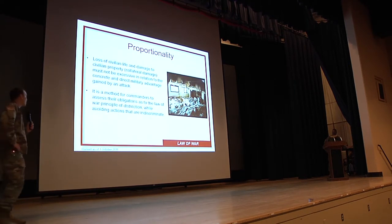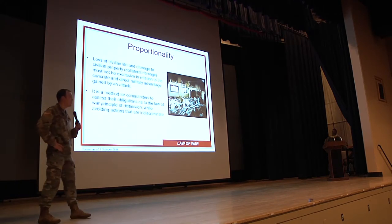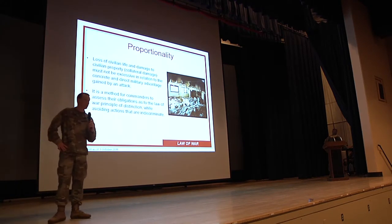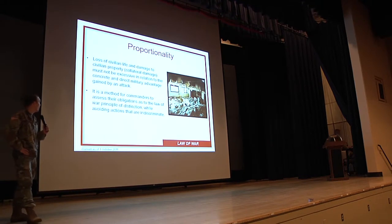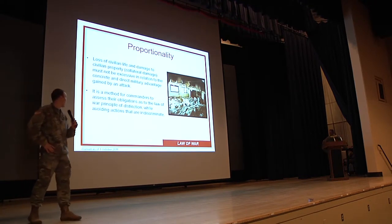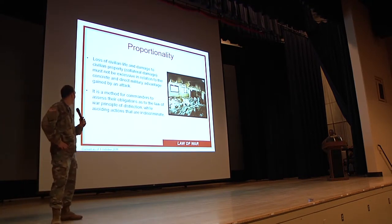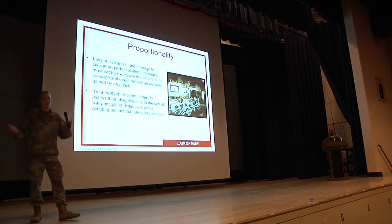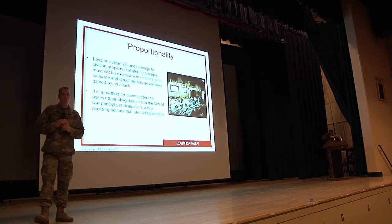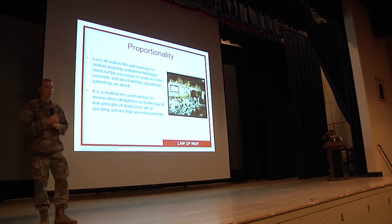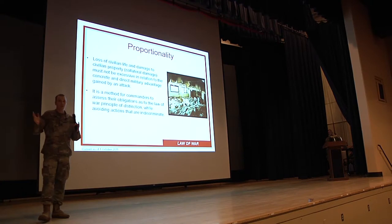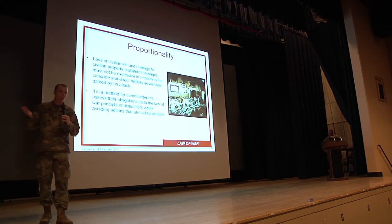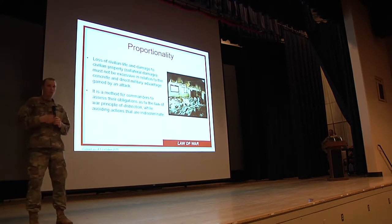Proportionality: loss of civilian life and damage to civilian property — collateral damage — must not be excessive in relation to the concrete and direct military advantage gained by an attack. So if you're trying to take out one guy who's a military leader and you know he's in this city, you don't drop an atom bomb on him. That's not going to be proportional.